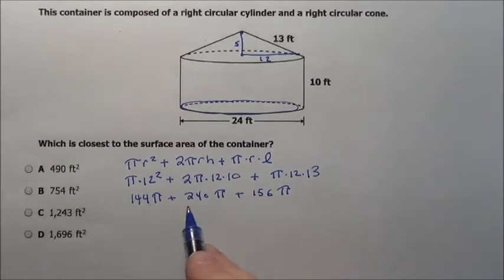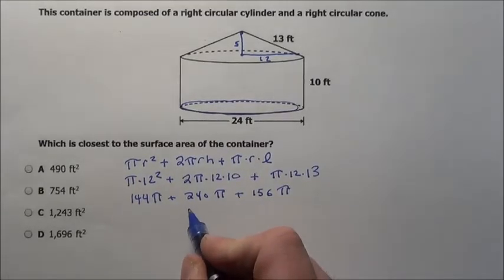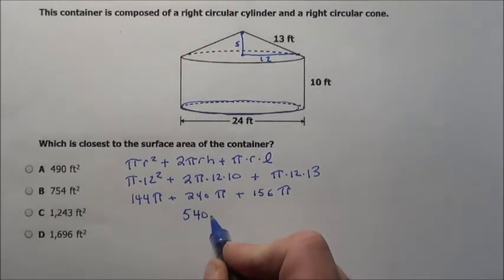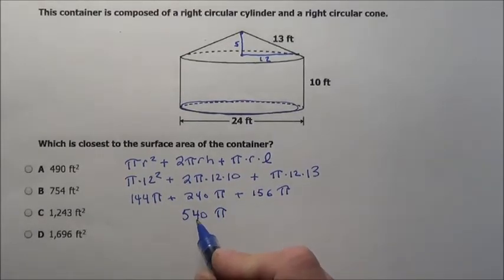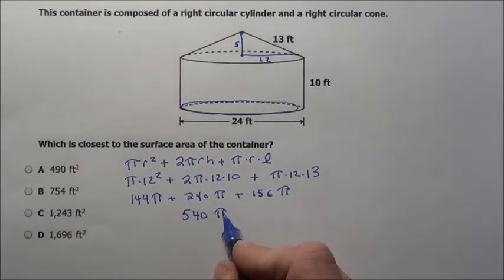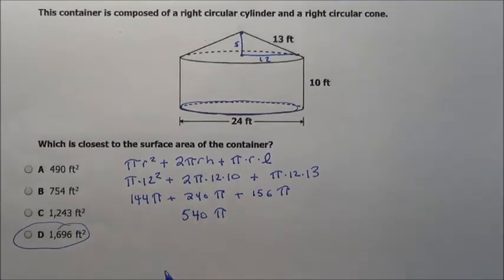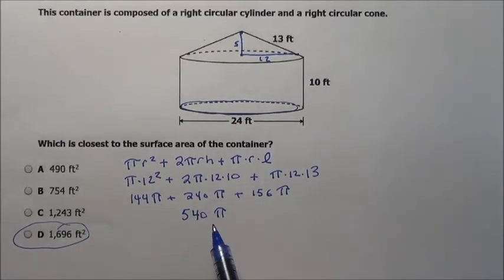When I put all these together, it's 540 pi. If I do 540 times pi, I'm going to get choice D right here, 1696.